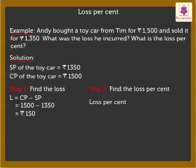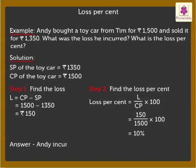Loss percent is equal to loss upon cost price into 100, which is equal to 150 upon 1,500 into 100. On simplifying, we get 10%. Thus, Andy incurred a loss of 150 rupees or 10% on the toy car.